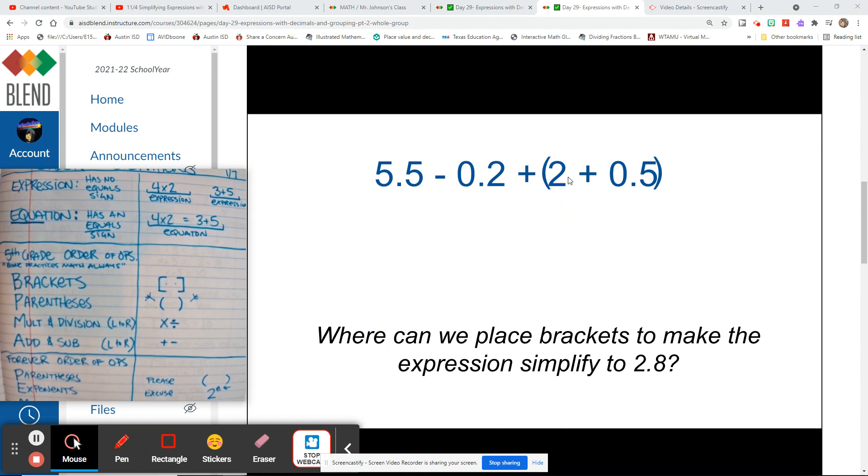Let's check it out. If we put the brackets there, let's use our order of operations and find out what happens. Let's see if getting all of these things inside brackets together as one number before we take it away from 5.5 will be enough to get our number as small as 2.8.